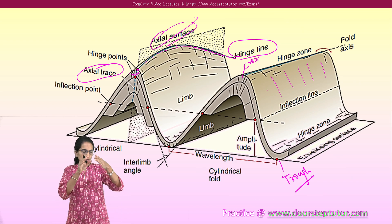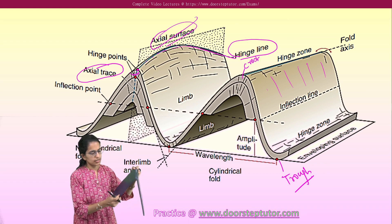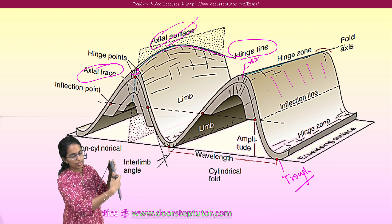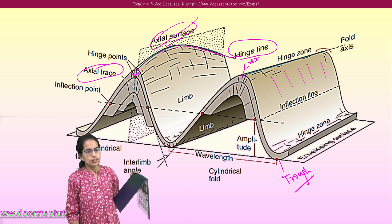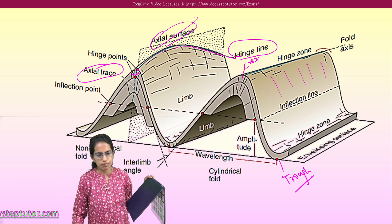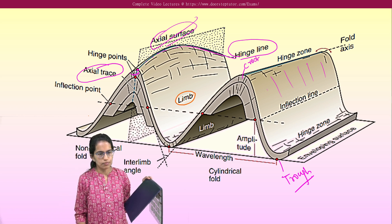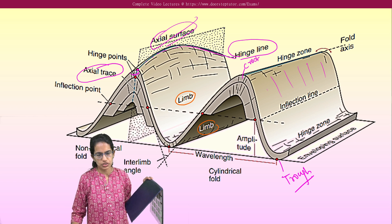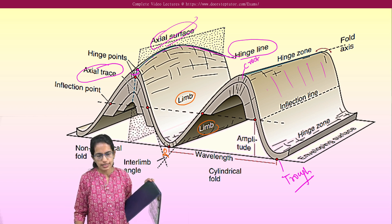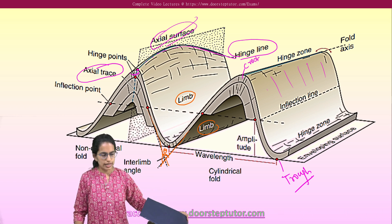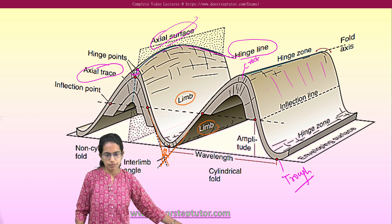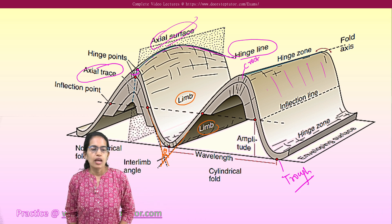Coming back to the diagram, the fold has two sides called limbs — limb one and limb two. The point where they meet is the crest. The angle between the two limbs is measured as theta, which is called the inter-limb angle.